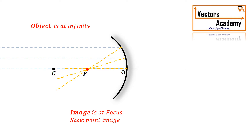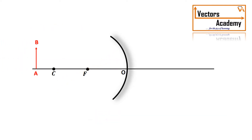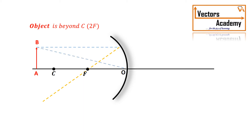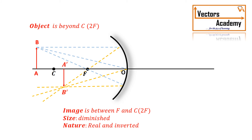If the object is brought closer to the mirror but beyond C, the rays parallel to the principal axis get reflected through the focus. The incident ray going to the center gets reflected at the same angle to the principal axis, and the ray passing through the focus gets reflected parallel to the principal axis. All reflected rays intersect at a point between the focal length and the center of curvature. The image formed is on the same side as the object, inverted, and diminished.